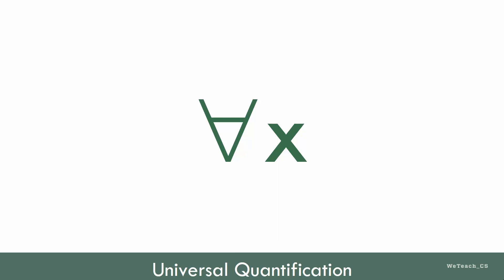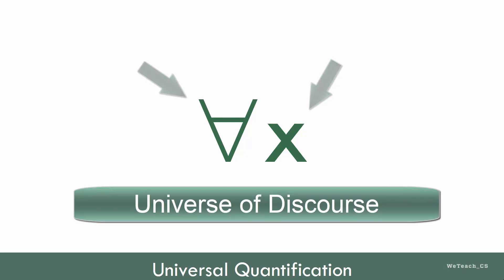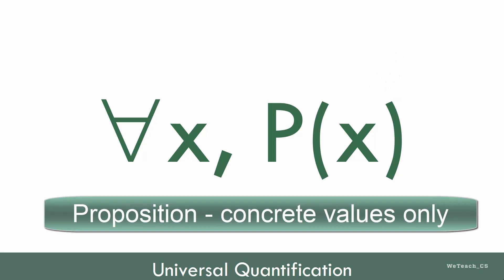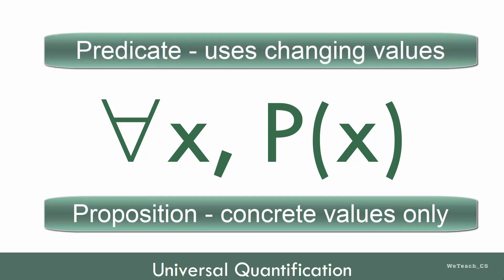The universal quantification symbol is the inverted A, followed by X, which represents one member of a set called the universe of discourse. We'll explain more about that in a moment. Universal quantification also uses something that is similar to a proposition, called a predicate. Here we have a predicate called P, with a variable X as its parameter. The difference between a proposition and a predicate is that a proposition only uses concrete values, where a predicate uses a variable, which can change values.